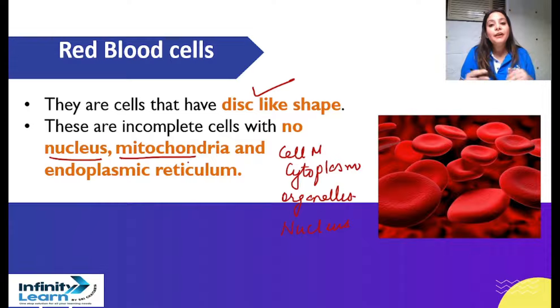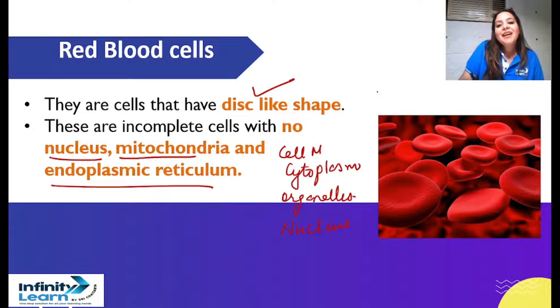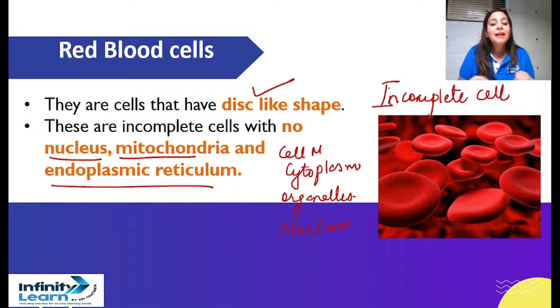So RBC is a cell which has no nucleus. Now if there is no nucleus, then cell division is not going to happen. Mitochondria, which does energy production, powerhouse of cells, is not there. Endoplasmic reticulum, the skeletal framework, is not going to be made. So what is there? The most important thing is hemoglobin. So this is why we call this cell an incomplete cell because these things lack.